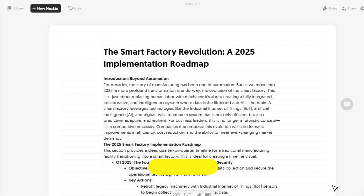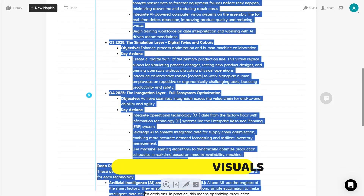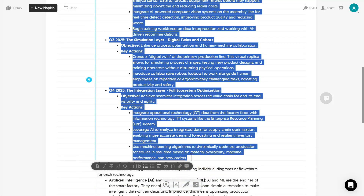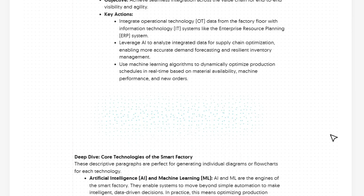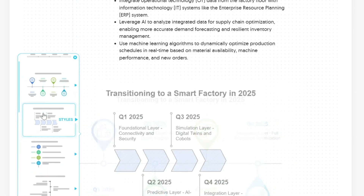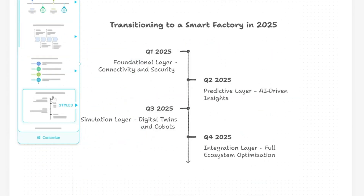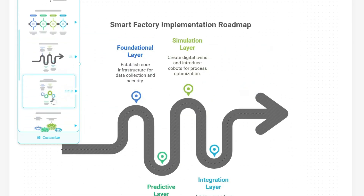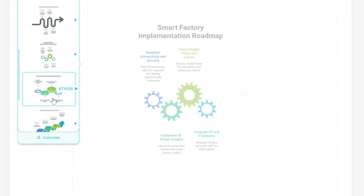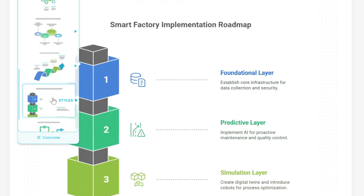Now, to generate visuals, simply select the portion of the text you want to visualize and click the blue lightning button next to it. In about 5 to 10 seconds, Napkin's AI analyzes the text, understands the hierarchy and relationships within the content, and presents a whole list of visual options. It generates engaging flowcharts and diagrams in seconds.